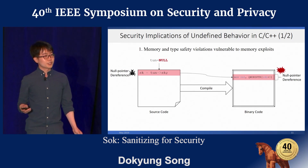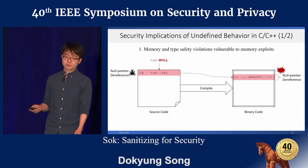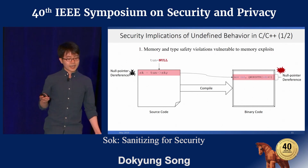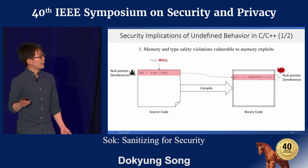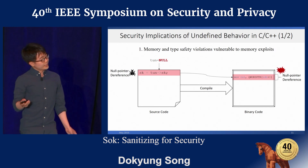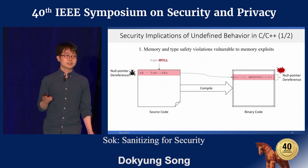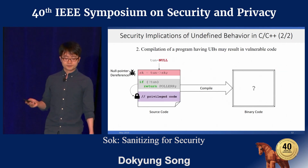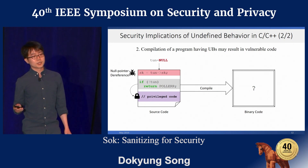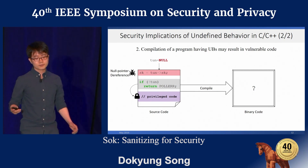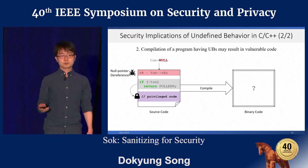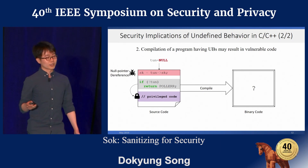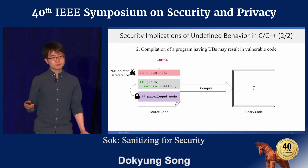The security implications of undefined behavior can be classified into two categories. First and foremost is memory safety violations, which are vulnerable to memory exploits. On the left-hand side of the slide is an example program statement vulnerable to null pointer dereference, and on the right-hand side is its compilation result. Null pointer dereference is undefined behavior and also a violation of memory safety that's exploitable under certain circumstances. Besides memory safety violations, there is a second security implication, often overlooked: the presence of undefined behavior in a program can surprisingly result in vulnerable code being generated by the compiler. Let me take the same example, but this time with an added null pointer check and some privileged code protected by that check.